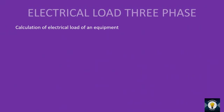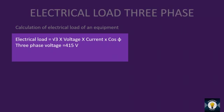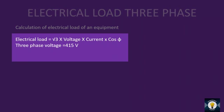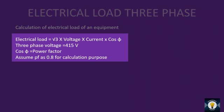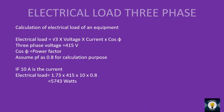In the case of three phase, there is a slight difference: electrical load equals √3 × voltage × current × cosφ. Three phase voltage is 415 volts — I am referring to the Indian three phase voltage; in your country it may vary slightly. Power factor is assumed 0.8. If current is 10A, then electrical load equals √3 (1.73) × 415 × 10 × 0.8 = 5743 watts, or 5.743 kilowatts.